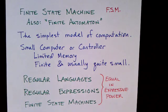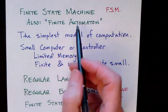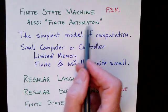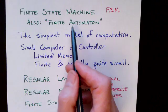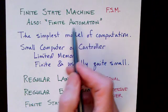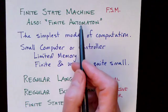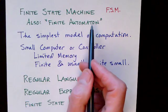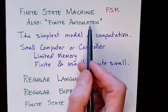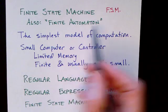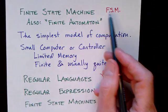Finite state machines are sometimes called finite state automata. This word 'automaton' has an unusual plural: the plural is 'automata.' So you say one automaton or two automata. The finite state machine is also called a finite automaton or finite state automaton. We'll also abbreviate it with FSM.